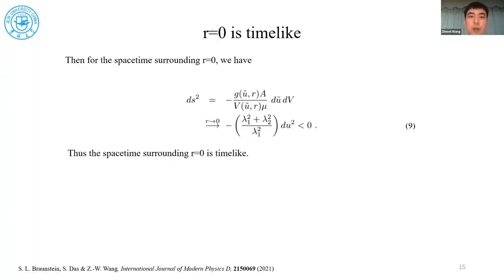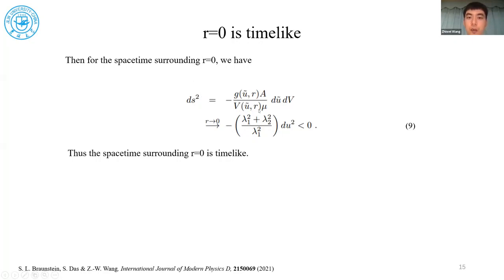Now we have the double null coordinates. We first study the spacetime surrounding r equals zero. I want to emphasize that r equals zero is not the singularity for the rotating black hole. We study the line element squared surrounding r equals zero. We find that when r approaches zero, this will always be negative, meaning this is a timelike spacetime or timelike congruence around r equals zero.